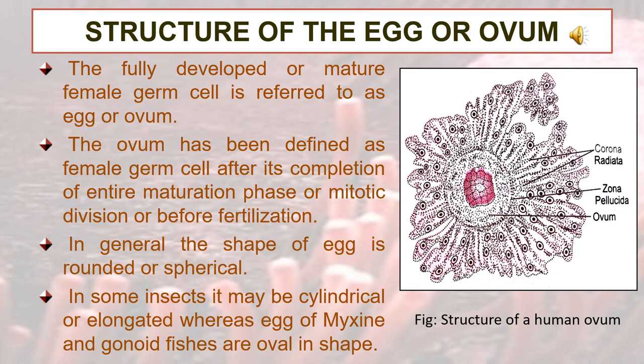Structure of the egg or ovum: The fully developed or mature female germ cell is referred to as the egg or ovum. The ovum has been defined as the female germ cell after the completion of the entire maturation phase or meiotic division and before fertilization. In general, the shape of the egg is rounded or spherical. In some insects, it may be cylindrical or elongated, whereas eggs of lampreys and ganoid fishes are oval in shape.